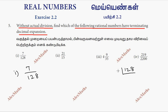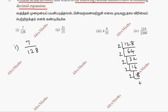Factorizing 128: 2 times 64, 2 times 32, 2 times 16, 2 times 8, 2 times 4, 2 times 2 — a total of 7 twos. So this is 7 by 2 to the power 7 into 5 power 0, which is in the form of p by 2 power m into 5 power n.